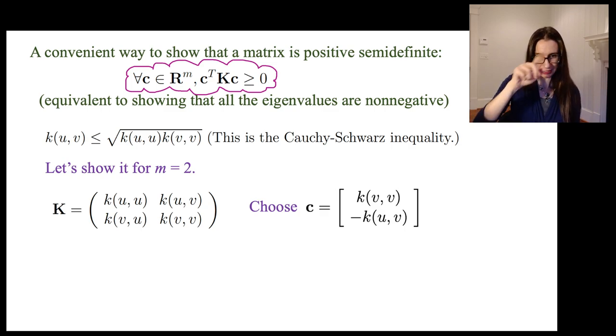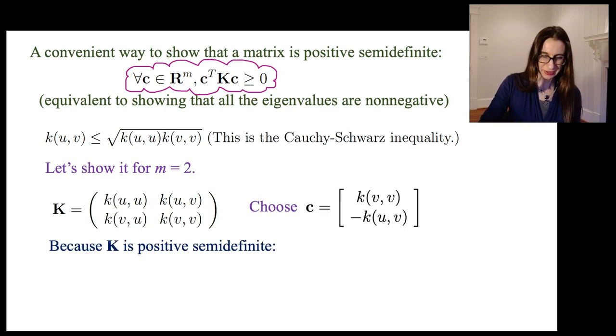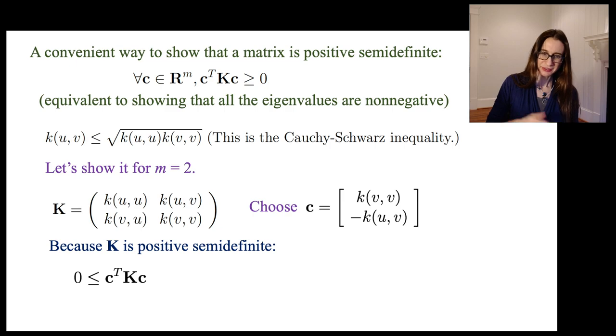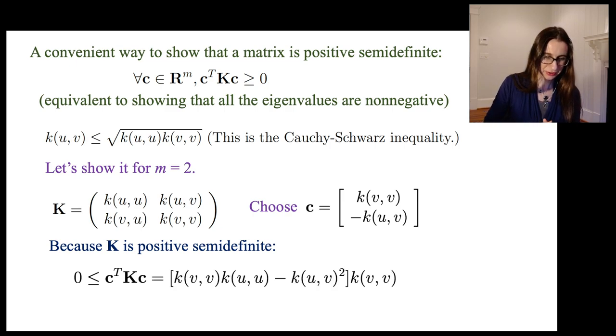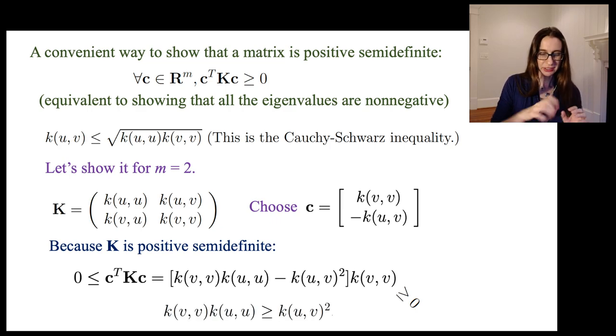Because K is positive semidefinite, 0 ≤ cᵀKc = [k(v,v)k(u,u) - k(u,v)²]k(v,v). So I know that this expression in the cloud has to hold, so let's just write that out. If I do a little bit of simplifying, I can actually write out that whole expression. I know that k(v,v) is greater than or equal to zero because I just proved it in the last slide, and so that means that the thing in brackets is also greater than or equal to zero, and so I can just rearrange it a little bit by putting one of the terms on the other side, and now I get k(u,v)k(u,v) ≥ k(u,v)². This is the Cauchy-Schwarz inequality. That's it. We're done.